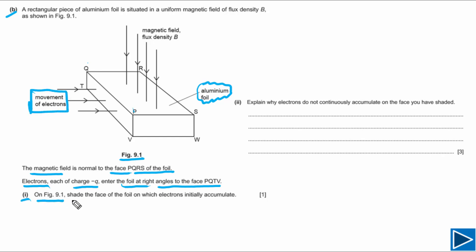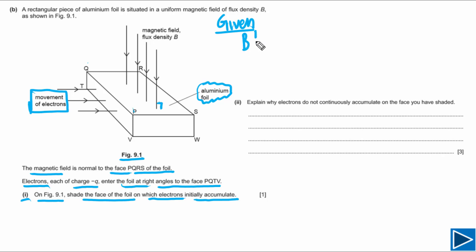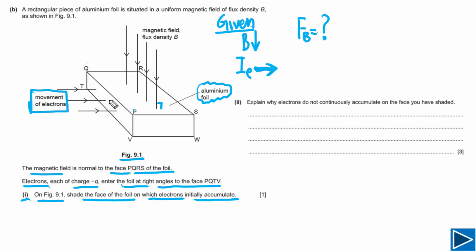For part B1, on figure 9.1 we need to shade the face of the foil on which electrons initially accumulate. The magnetic field B is perpendicular to face PQRS, so its direction is vertically downwards. The direction of movement of electrons — which corresponds to conventional current to the right — is given. If we find the direction of magnetic force on these electrons, we can determine where they will be deflected.